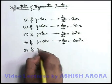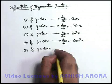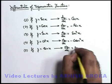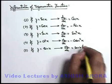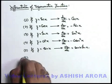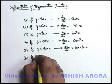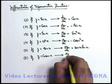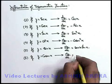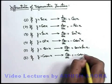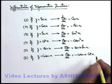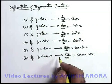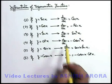And if y is given as sec x, then dy/dx is written as sec x tan x. The last direct differentiation formula for trigonometric functions is for cosec x. In this situation dy/dx is written as minus cosec x cot x. So these 6 direct relations for trigonometric differentiation you need to keep on your tips.